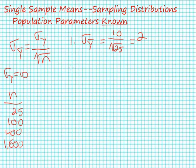Let's move on to our second sample size. Here, sigma sub y-bar equals 10. So our numerator for these problems will always be 10, because that's our population standard deviation, divided by the square root of 100. And this will equal 1.